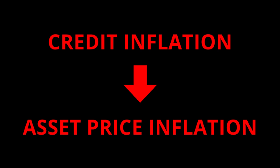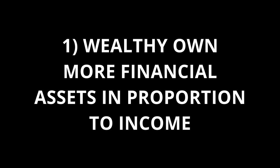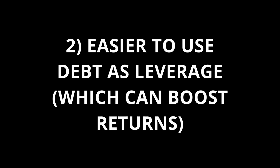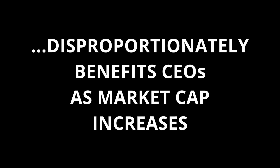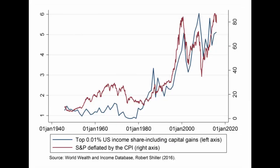Asset price inflation predominantly benefits the richest in society for several reasons. First, the wealthy tend to own more financial assets than the poor in proportion to income. Second, it is easier for the richest individuals to contract debt in order to buy shares that can be sold later at a profit, since credit easing lowers the interest rate and therefore funding cost — the profits made by selling inflated assets bought on credit will be even greater. Finally, asset price inflation coming with the growth of financial markets will benefit those working in the financial sector, and will also benefit the CEOs of publicly traded companies who will be paid more as the market cap of their companies increases. Hence, the correlation between asset prices and income inequality has been, as expected, very strong.